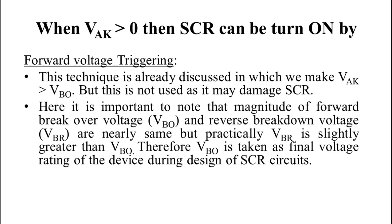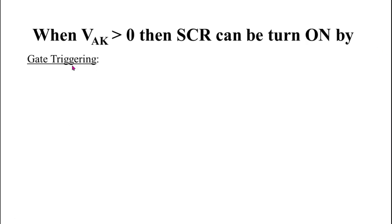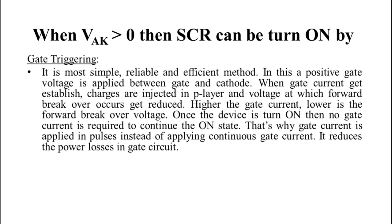Now second method is gate triggering. It is most simple, reliable, efficient and widely used method. In this, when anode to cathode voltage is greater than zero, then a positive gate voltage is applied using gate cathode circuit. We know that when SCR is forward bias or VAK is greater than zero, then outer two junctions J1 and J3 are forward bias and middle junction J2 is reverse bias.